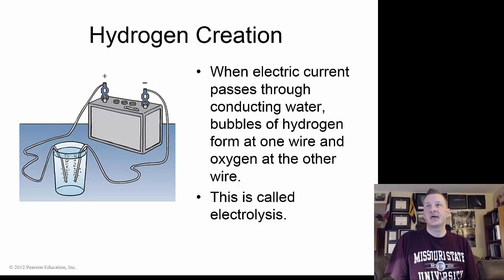We can create hydrogen. When an electric current passes through conducting water, bubbles of hydrogen form at one wire and oxygen at the other wire. This is called electrolysis. You'll remember that water is basically the chemical equation H2O, hydrogen and oxygen. So we're separating those two.